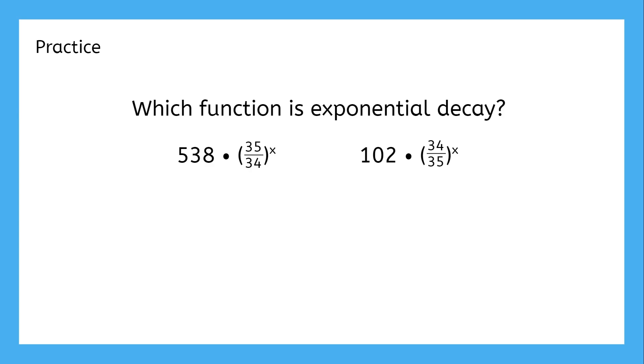This one's a little tougher to tell because the fractions look so similar. This fraction is improper, with the numerator larger than the denominator. If we convert it into a mixed fraction, we get a value of one plus one thirty-fourth. The growth factor in this function on the right is already a proper fraction, meaning it's less than one. So this function here is the exponential decay function.